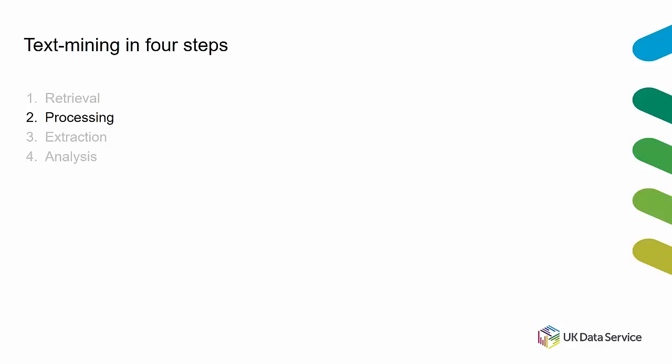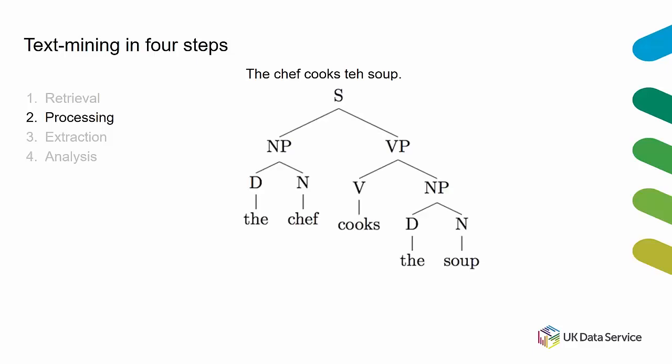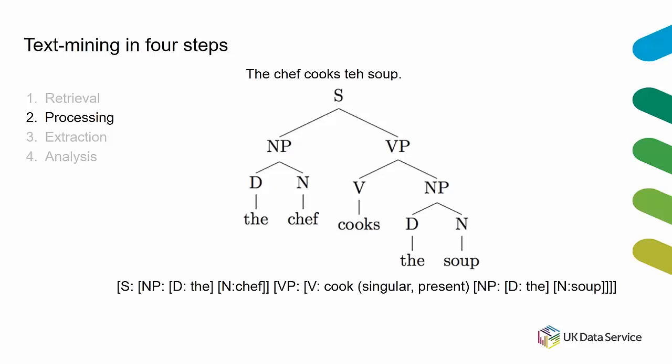Extraction is about running the statistical analysis on the processed data. For example, if the raw data was a sentence from a message board or tweet — with capitalization, punctuation, and a spelling error — you would process it by removing those, then put it into machine-readable format: a nested set of brackets with part-of-speech tags, where 'cook' is classed as a singular present-tense verb. This final tagged output looks like gobbledygook to us, but a computer really needs this nested series of tagged language to work with.